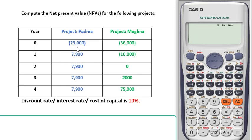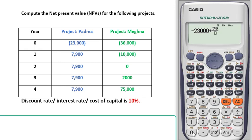Here, the amount within the bracket represents a negative cash flow or cash outflow. So we have to put a negative sign in front of this amount, 23,000. We have nothing called year zero — this zero means today. As it is the present value, or today's value, we don't need to discount it. This next amount is to be received one year from now, so we have to discount it using year equal to one.